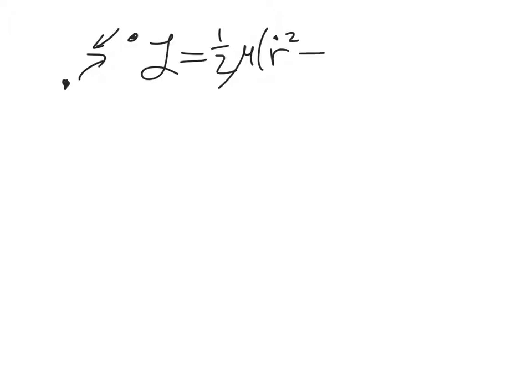So remember, r represents the radial distance between the two objects. Phi is some angle indicating the positions as the two objects orbit one another. And so our kinetic energy is this. And then our potential energy is some potential energy U, which just depends on the radial distance between the two objects.